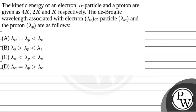Let's read the question. The question says that the kinetic energy of an electron, alpha particle and a proton are given as 4k, 2k and k respectively. The de Broglie wavelength associated with electron lambda E, alpha particle lambda alpha and the proton lambda P are as follows.